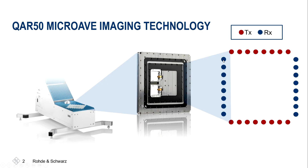On the right-hand side, you see the RX antennas — the line of RX antennas and the line of TX antennas — that we are using in order to create the image.